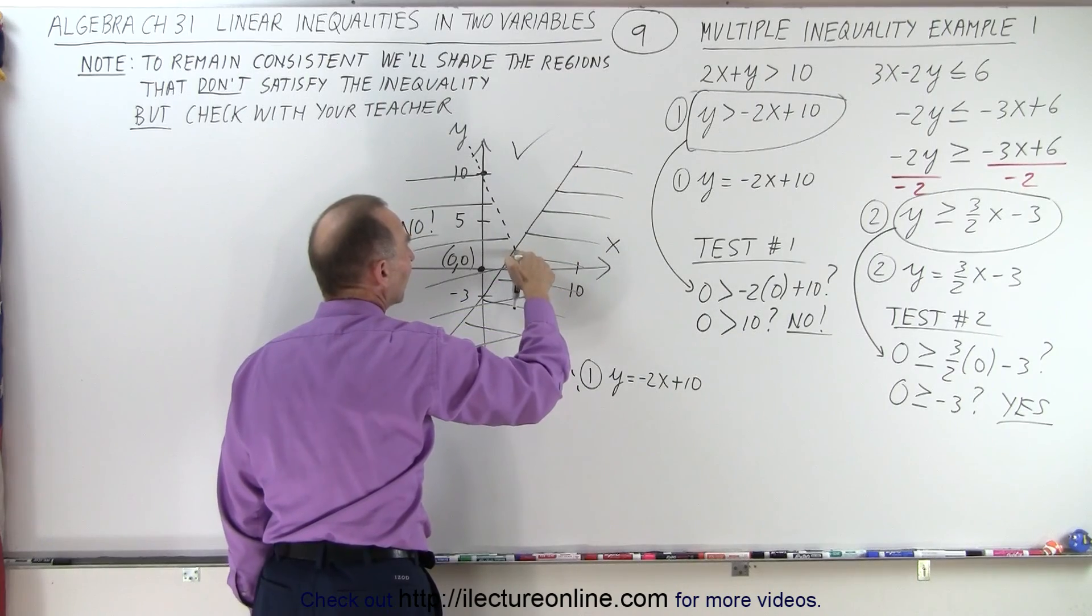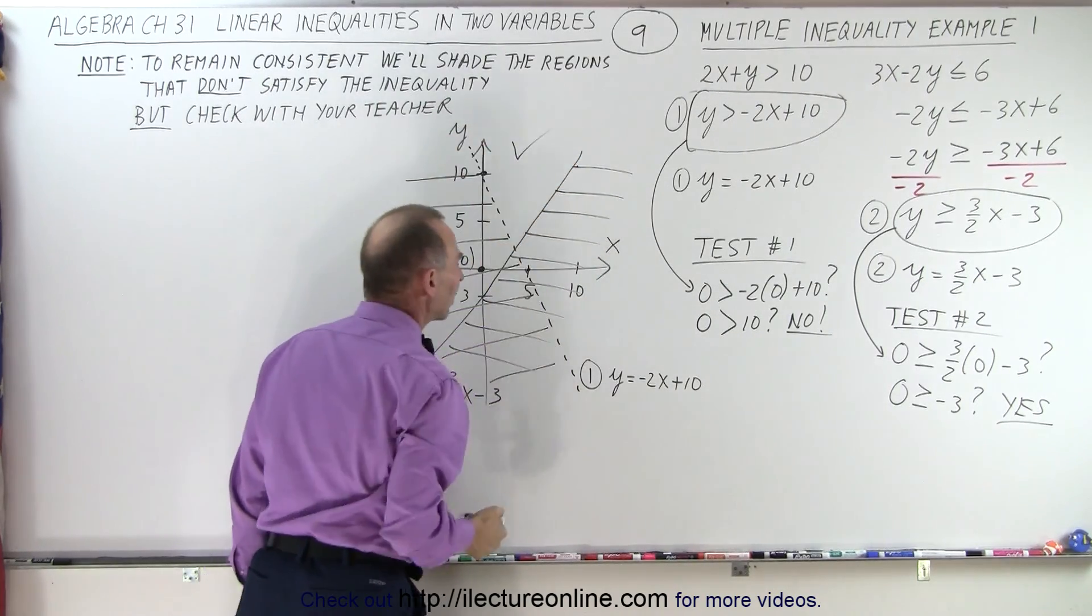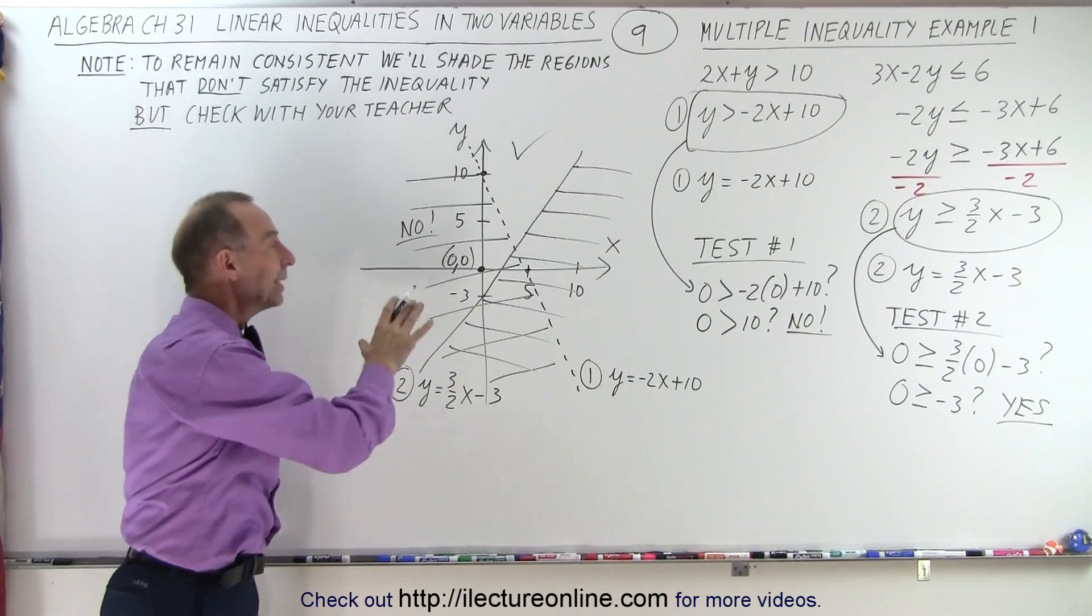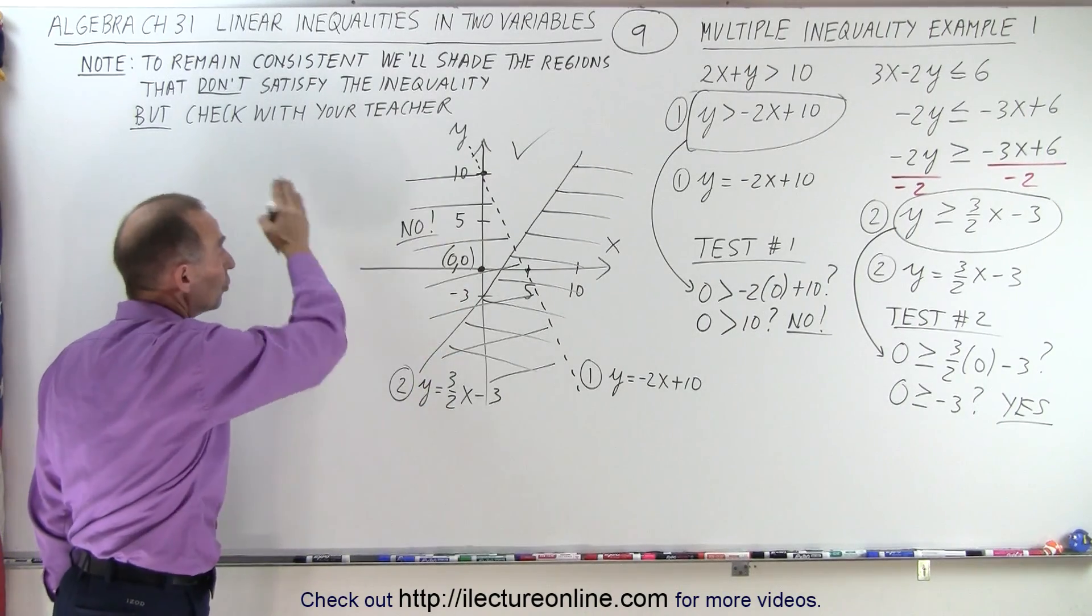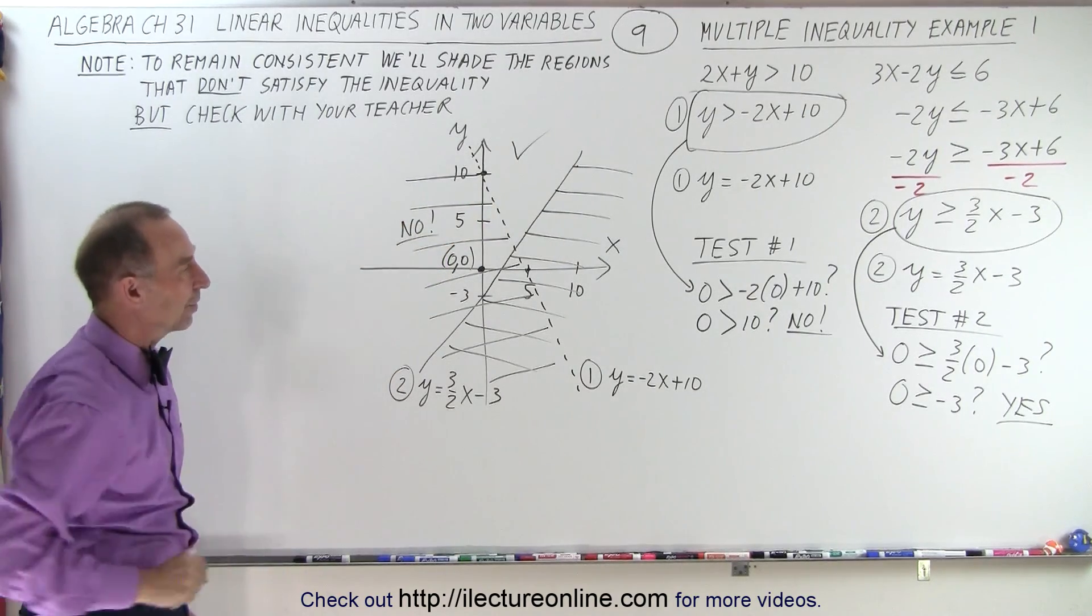The solid line is included, this region is included, and the dashed line is not included. That's how we find the proper region that satisfies both inequalities at the same time. Shading out the regions that do not satisfy inequality makes it a lot easier to find it. And that is how it's done.